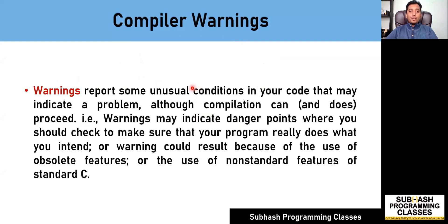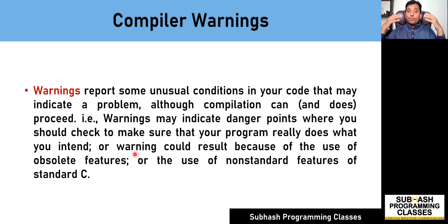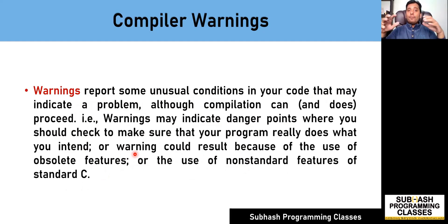What do you mean by compiler warnings? Warnings report some unusual conditions in your code that may indicate a problem, although compilation can and does proceed. Warnings may indicate danger points where you should check to make sure that your program really does what you intended to do, or warnings could result because of the use of obsolete features or non-standard features. This means that warnings are the compiler's way to indicate that the compilation has completed and the binary file has also been generated, but the compiler cannot guarantee whether the program will generate the desired output or not.